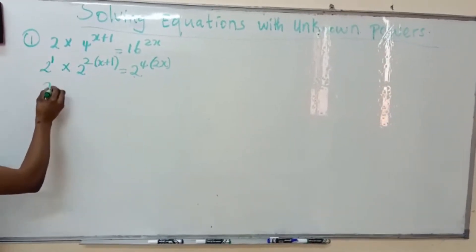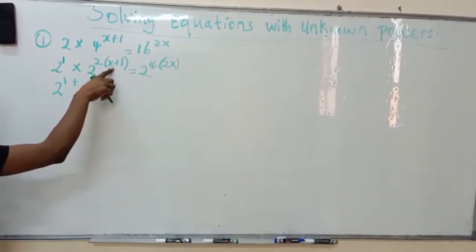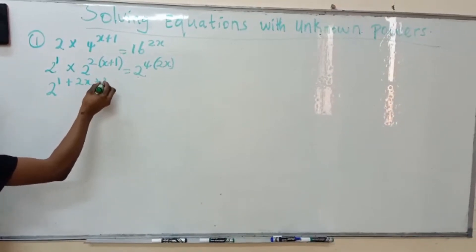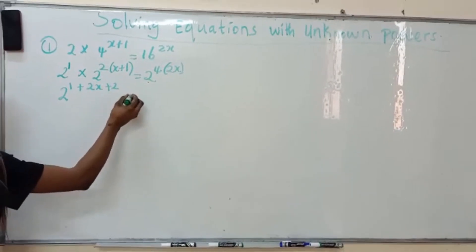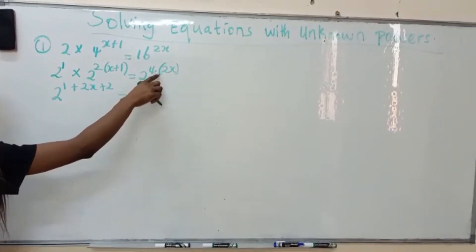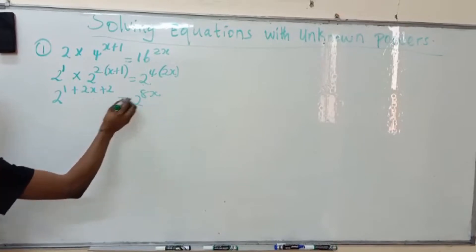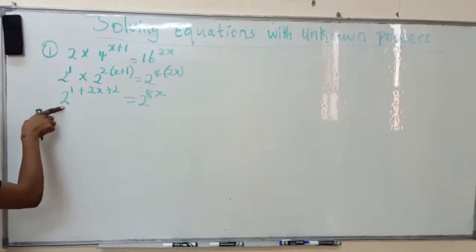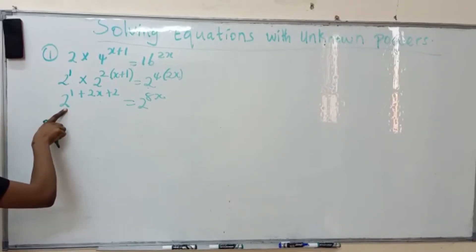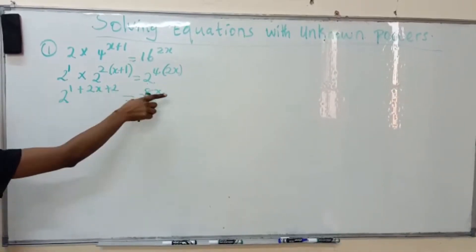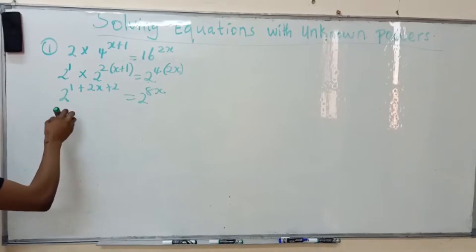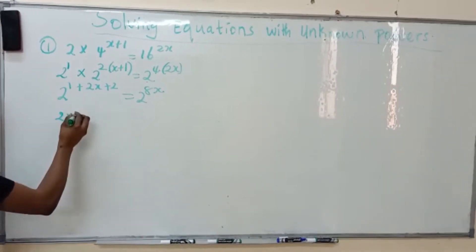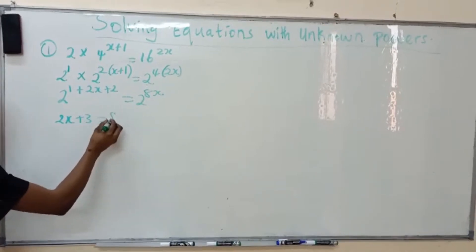We have 2: 1 plus 2 times x gives 2x. 2 times 1 plus 2 equals 2. 4 times 2 gives 8x. So here we have 1 plus 2 equals 3. Looking at the left side and the right side, they have the same base. We equate their powers. So we have 2x, 1 plus 2 plus 3 equals 8x.